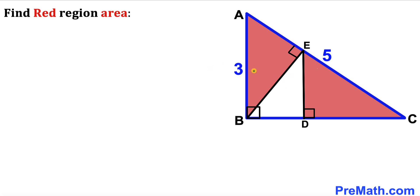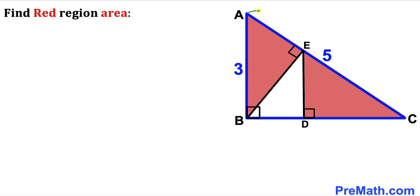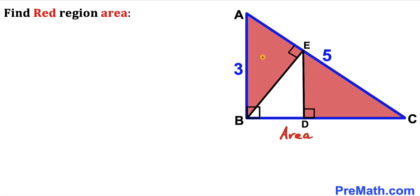Welcome to pre-math. In this video we have got a right triangle ABC that consists of two red triangles along with a white right triangle BDE, as you can see in the diagram. The side length AB of this triangle is 3 units whereas the side length AC is 5 units. Our task is to calculate the area of the red shaded region — the two red areas combined.